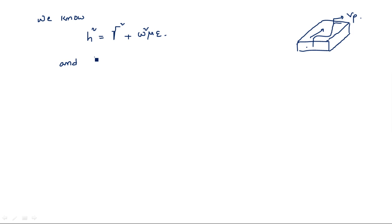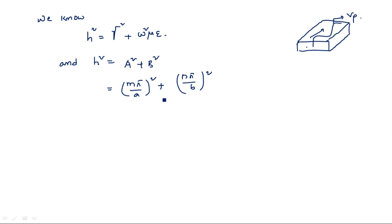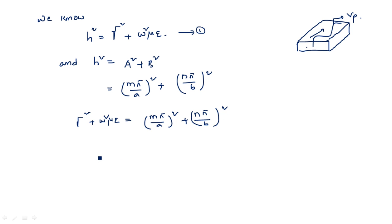During the calculation we also assumed h² = a² + b², where from the boundary conditions a = mπ/a and b = nπ/b. So h² = (mπ/a)² + (nπ/b)². Substituting this into equation 1: γ² + ω²με = (mπ/a)² + (nπ/b)², which gives us γ² = (mπ/a)² + (nπ/b)² − ω²με. This is equation 2.